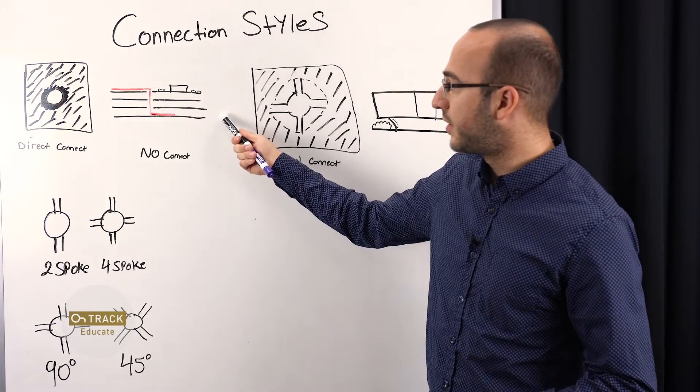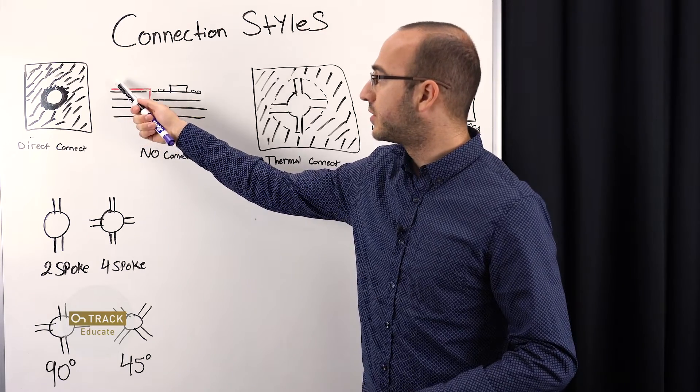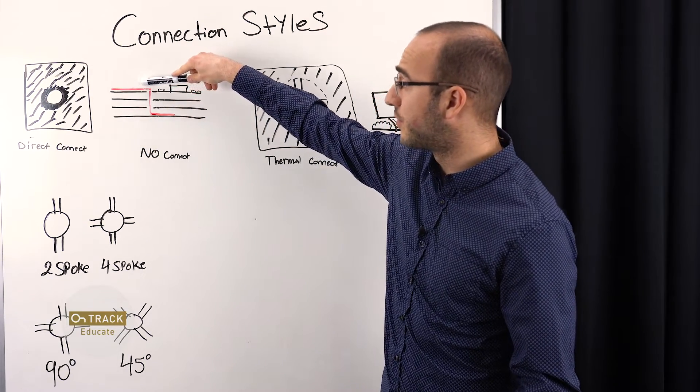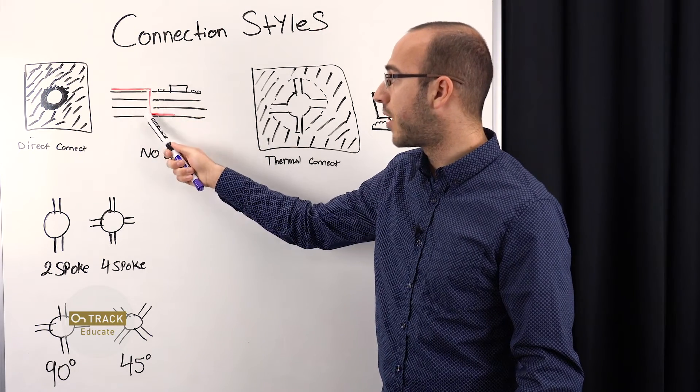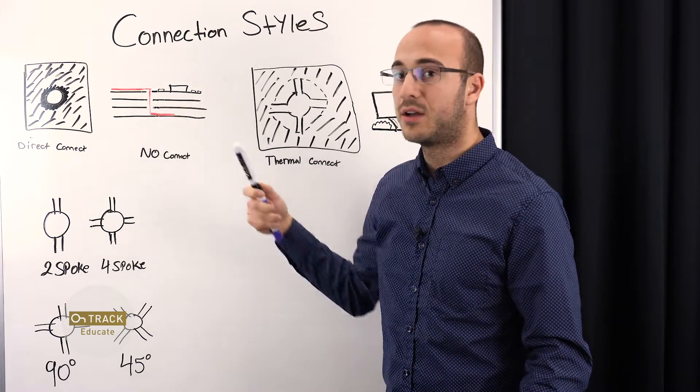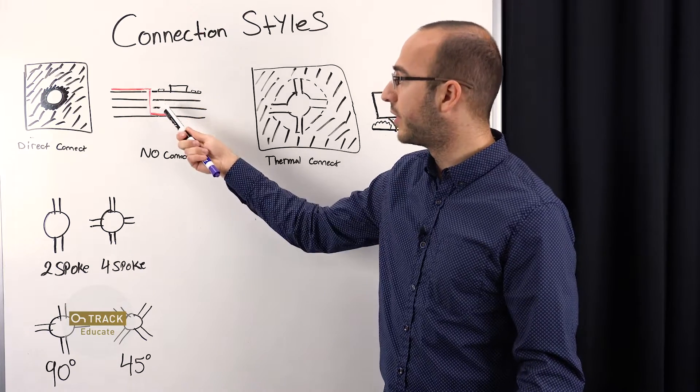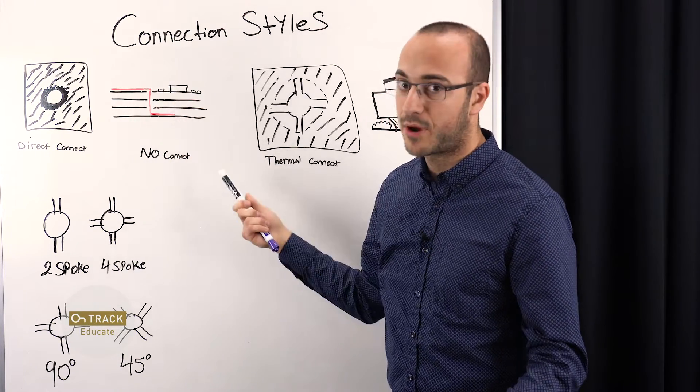So here's an example. If we're looking at our board from the side and we want to have our signal go from the top layer to the bottom layer, we may have a direct connect at the top and bottom, but a no connect in the inner layers. So we're avoiding connecting these inner layers. We're just going from the top to the bottom.